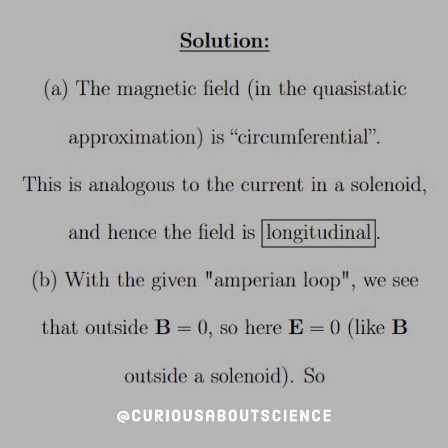And if we look at this for part A, we see that the magnetic field in a quasi-static approximation is circumferential. Use the right-hand rule on the current, and we see that the magnetic field is trying to curl around the axis, so it comes as a circumferential field. This is analogous to the current in a solenoid, because the current is running circumferentially, and hence the field is longitudinal.